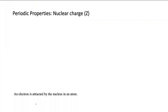Well, an electron is attracted by the nucleus in an atom. So we know nucleus is positive and electron is negative. That's why there is an attraction between these.